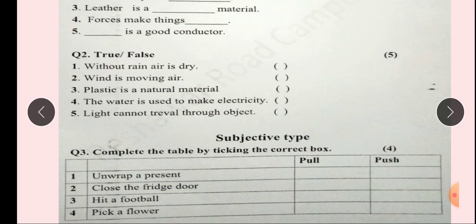Question number 3, Complete the table by ticking the correct box. You have to read statements and tell which box to fill. First option is Pull, second is Push. Pull is toward your side, Push is away from your side. Number 1: Unwrap a present. Unwrap means open.